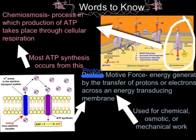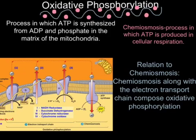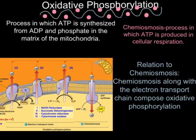I spelled proton wrong — it's proton, not protein. The process of oxidative phosphorylation is the process in which ATP is synthesized from ADP and phosphates in the matrix of the mitochondria. Chemoosmosis, along with the electron transport chain, compose oxidative phosphorylation.